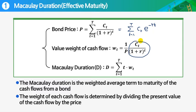And if we add all the present value of cash flow, then it becomes bond price, right? It is sum of all the discounted cash flows.